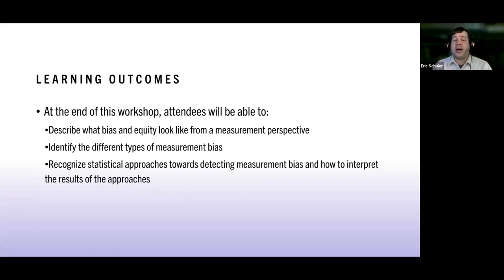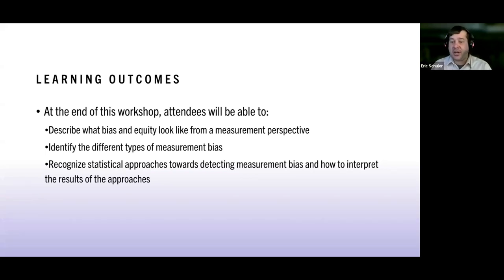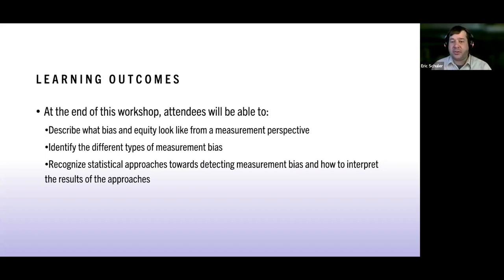The learning outcomes are: to describe what bias and equity look like from a measurement perspective, to identify different types of measurement bias, to recognize different tools in our toolbox to detect measurement bias, and to interpret results from that. I'll try to keep my eyes on the chat for questions.